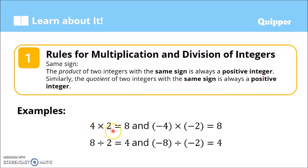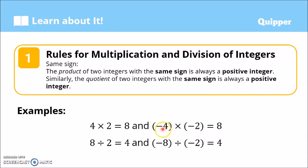Examples. We have 4 times 2 equals 8. So 4 is positive and 2 is also positive, so the sign of the answer is positive. We just do the ordinary multiplication: 4 times 2 is 8. Positive times positive, the product is positive. Similarly, if we have negative 4 times negative 2, we have a negative integer times a negative integer, so the answer is positive. Same signs, the answer is positive. So 4 times 2 is 8, and the answer is positive 8.